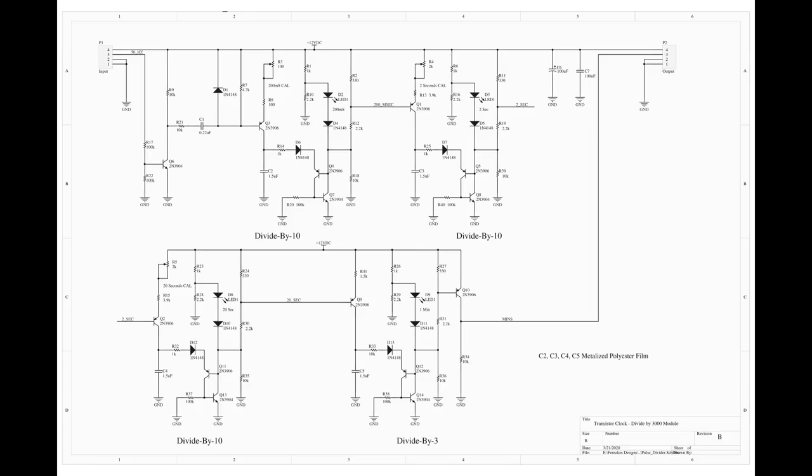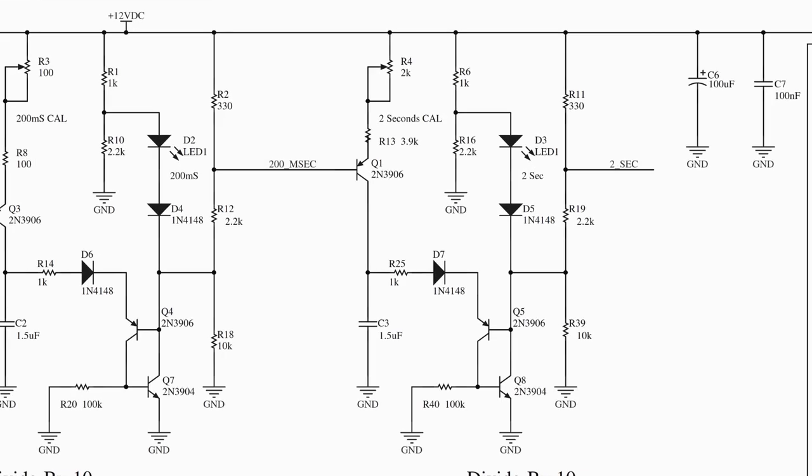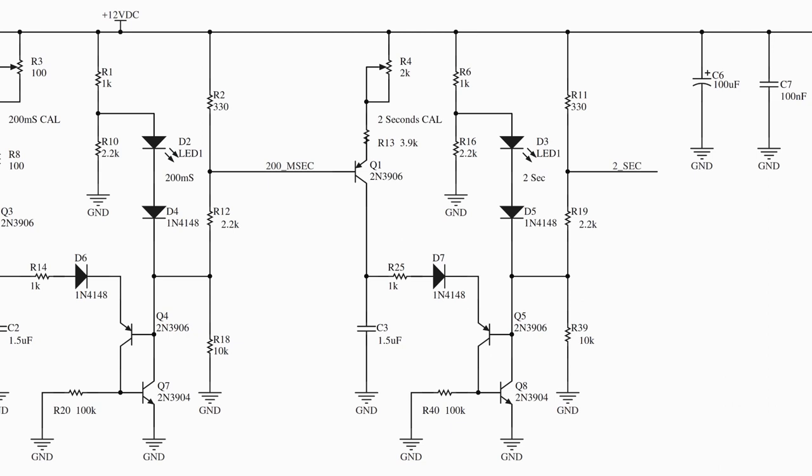Here's the schematic for the overall pulse divider board. Let's zoom up close and have a look at one of the stages and figure out how this thing works. Each stage is comprised of four basic elements. There's a current source which charges the capacitor, the capacitor itself, an SCR that's formed by the two transistors, and a voltage divider that sets the reference voltage.